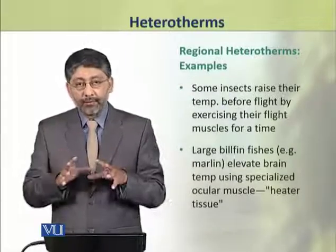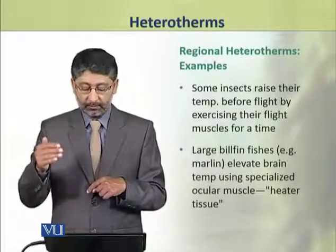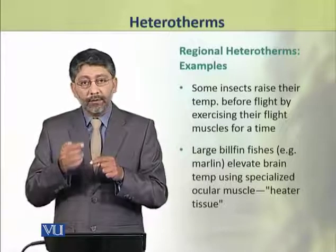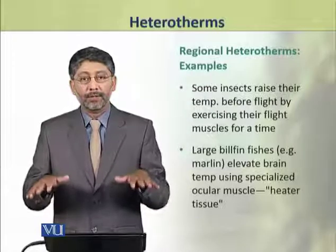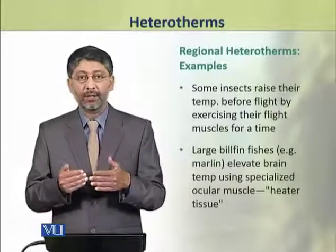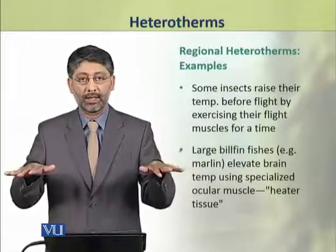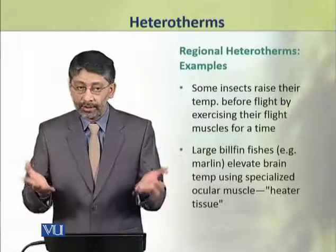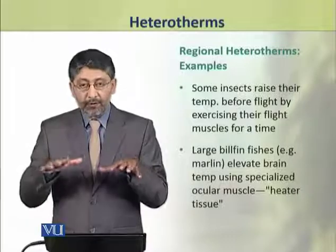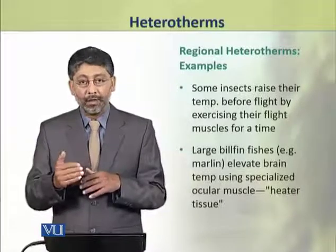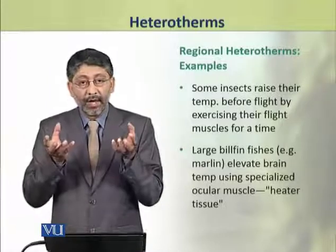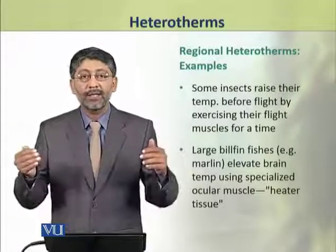Similarly, some insects can raise their temperatures before flying by exercising their flight muscles. Marlins use their ocular muscles to elevate the temperature of their brain slightly. These ocular muscles are referred to as heater tissue in them.